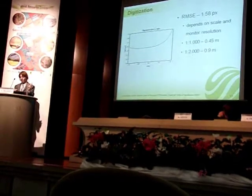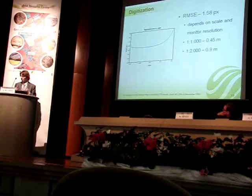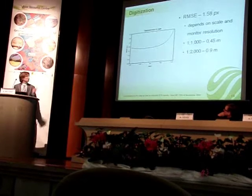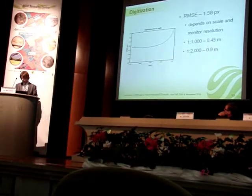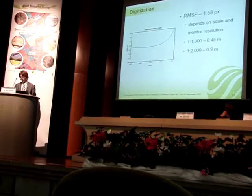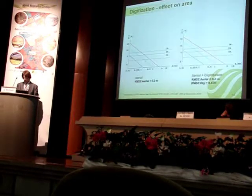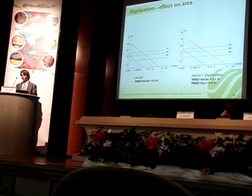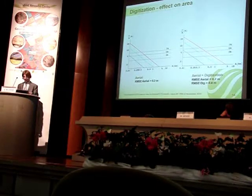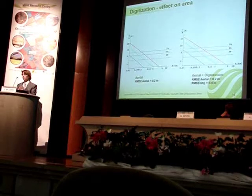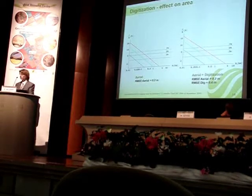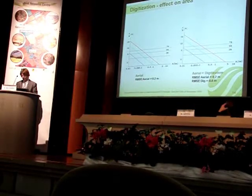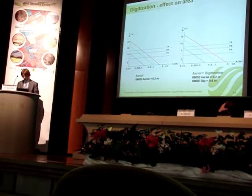We took 40 centimeters as our digitization error estimate. On the left screen you can see the same chart as before, only in logarithmic scale because it's easier to show. On the right side you have the aerial imagery error and the digitization error combined. What you see is that the errors are larger — the line shifts to the right, which means the error is larger.